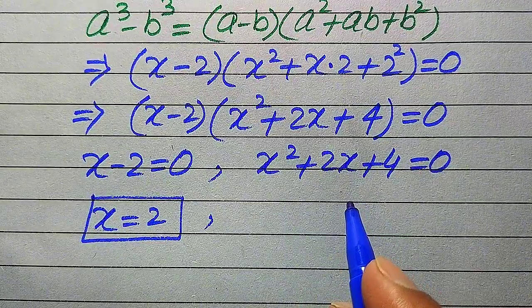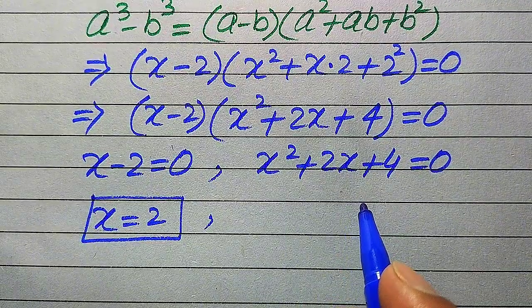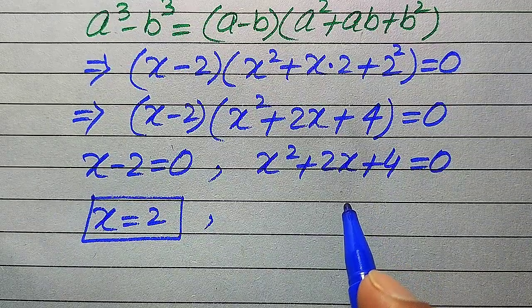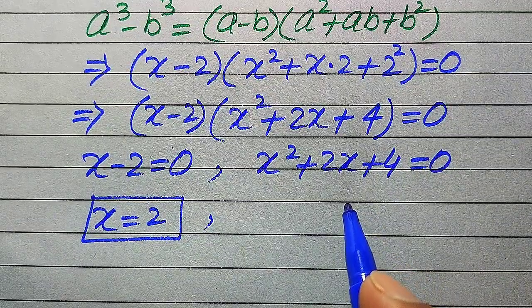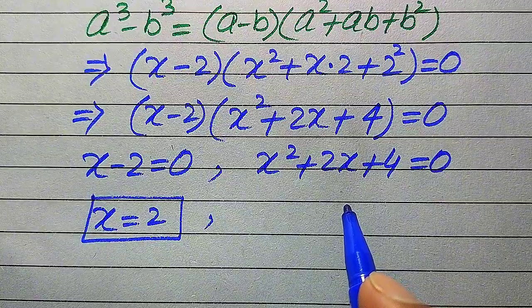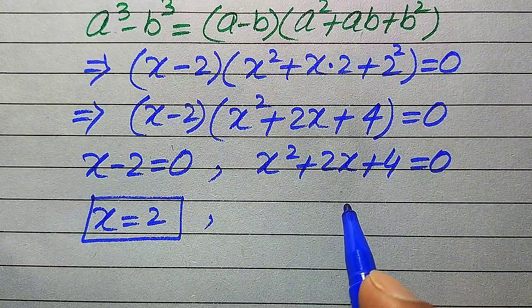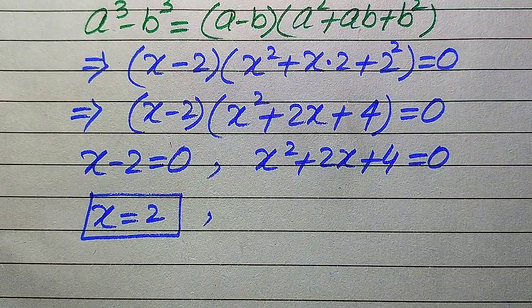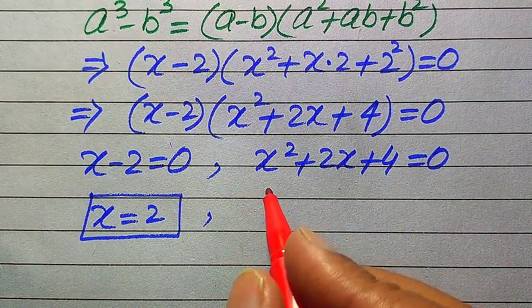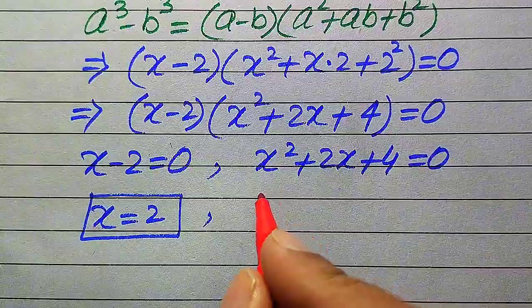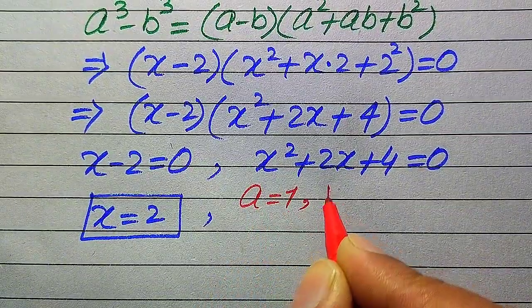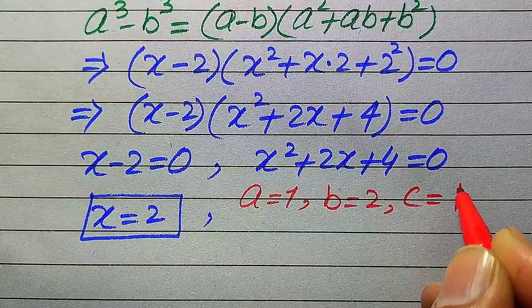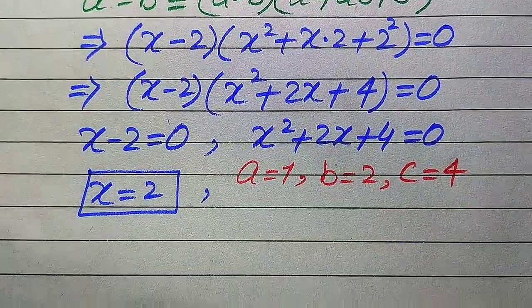To find the other roots, we solve the quadratic equation x squared plus 2x plus 4 equals 0. There are three methods: factorization, completing the square, and the quadratic formula. We use the quadratic formula here. The coefficients are a equals 1, b equals 2, and c equals 4.